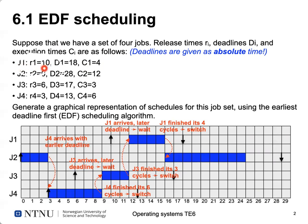Job one is released at time unit 10, has an absolute deadline of 18, and needs four cycles. Job two starts at zero, has a deadline of 28, and needs 12 cycles. Job three can start at six, must be finished by 17, and needs three cycles. Job four starts at time three, has a deadline of 13, and needs six cycles to complete.